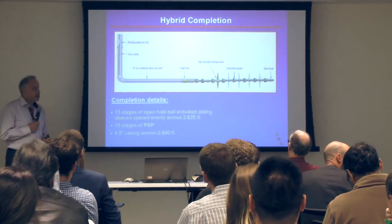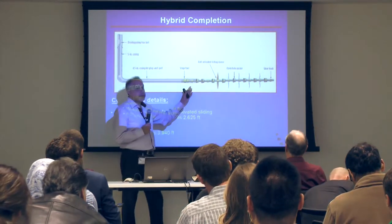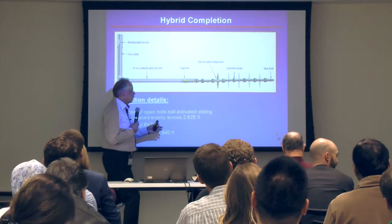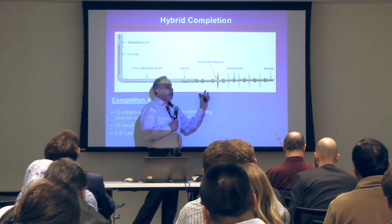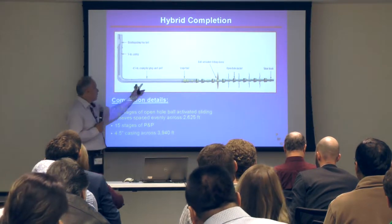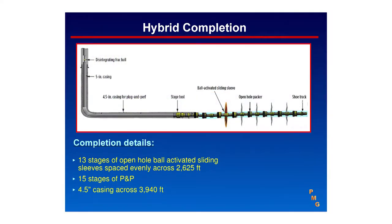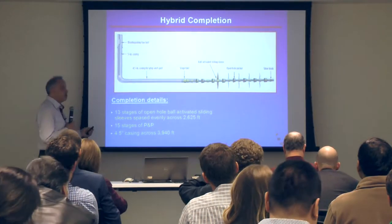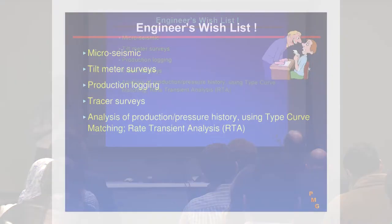In the Argentina hybrid example, the section close to the toe is completed with open hole completion — you don't have to run the perforating gun a long distance or mill out the plug. The open hole section uses ball isolation, and the other half uses cased hole completion with cement, perf, and plug. They used 13 stages for the ball isolation section and about 15 stages for the plug-and-perf side.